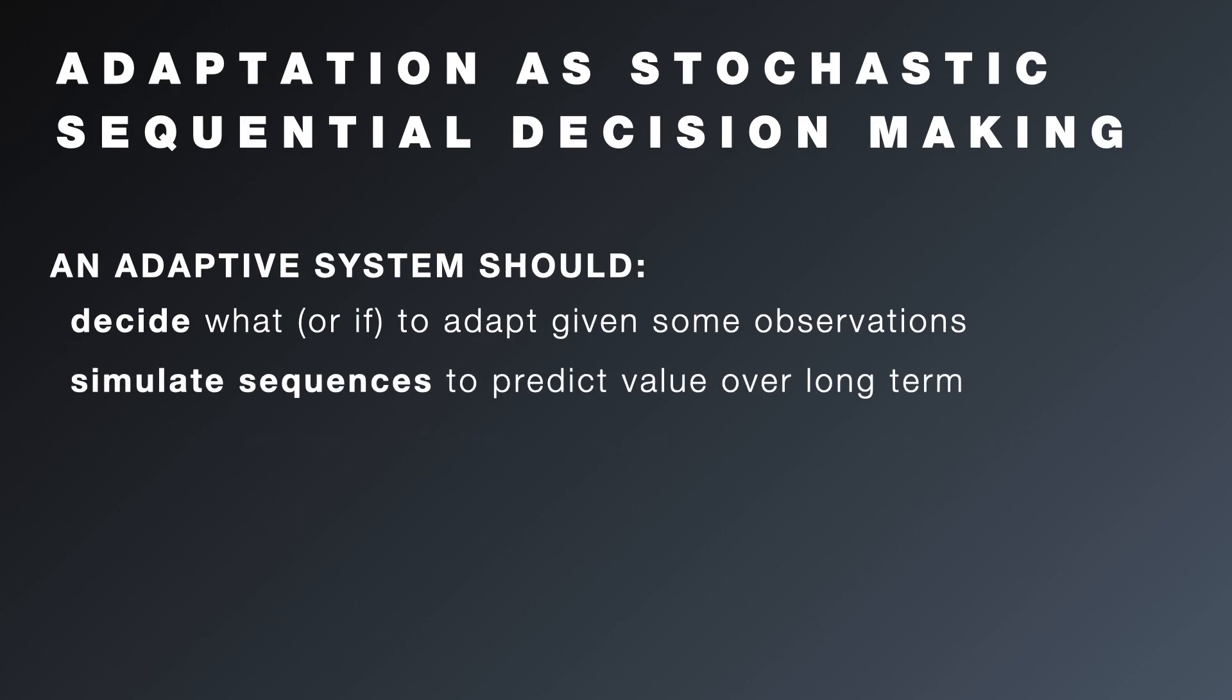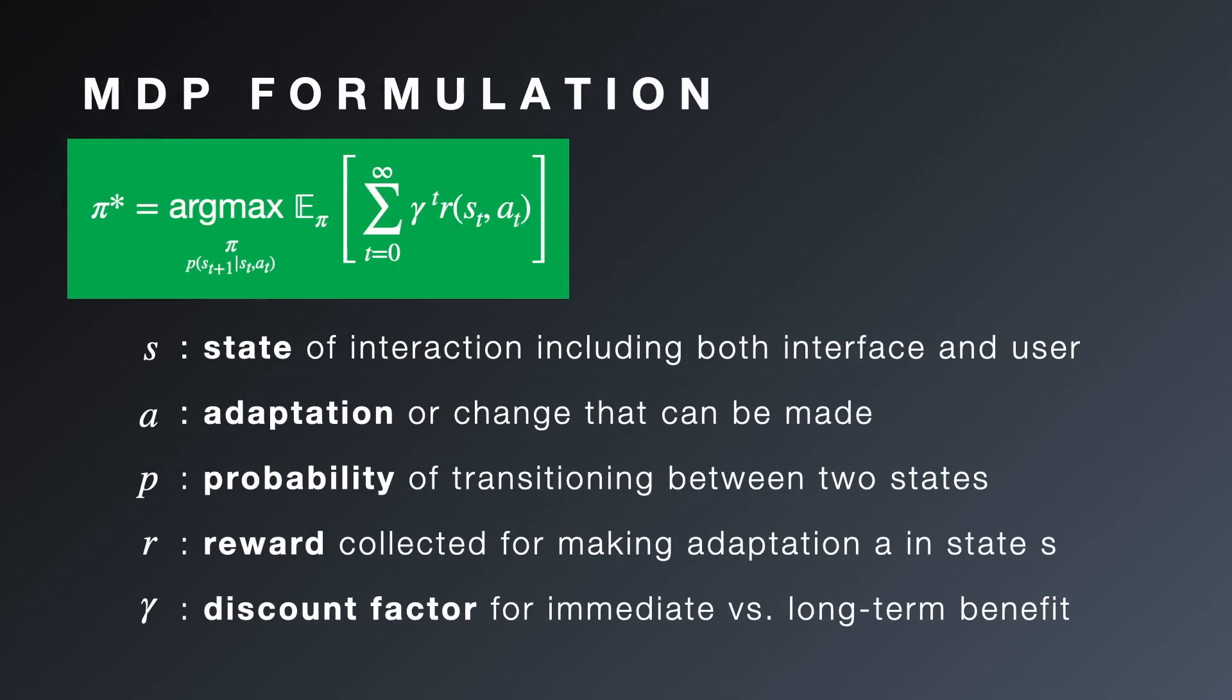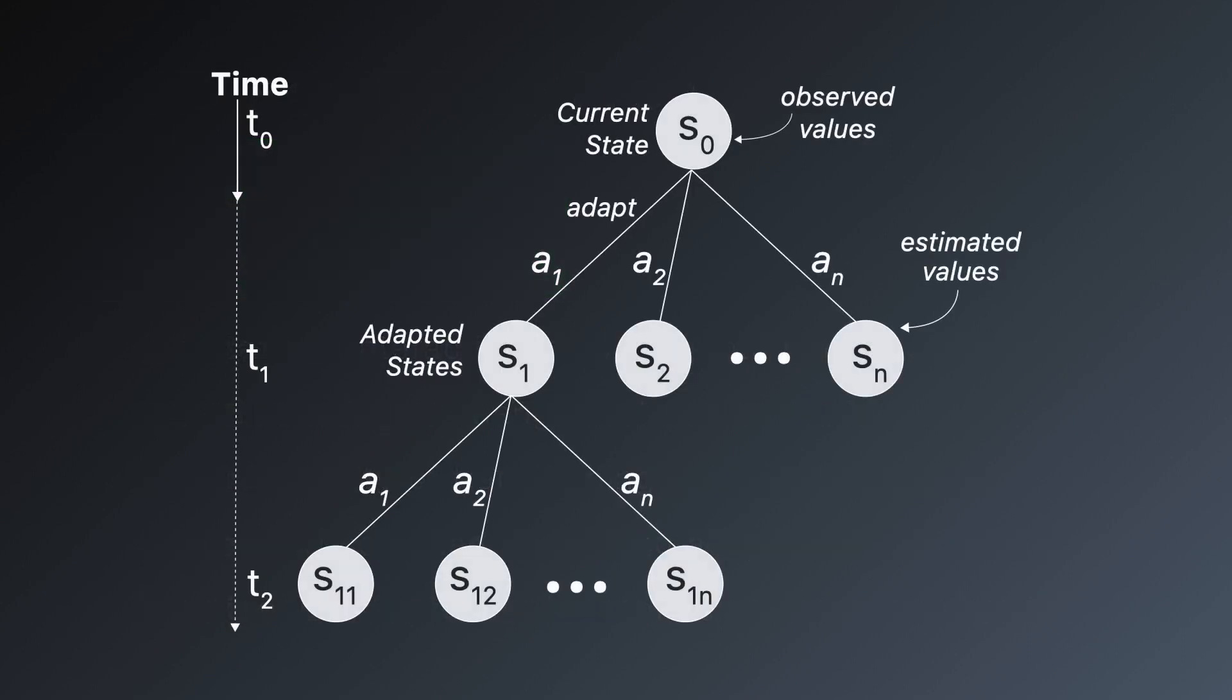Given the noisy nature of user interactions, it should make these decisions while accounting for uncertainty. The problem can then be formalized as a Markovian decision process, where a state represents both the interface and the user, and adaptations are actions that lead to different states. The goal of the system then is to maximize utility by picking an optimal policy for making adaptations.